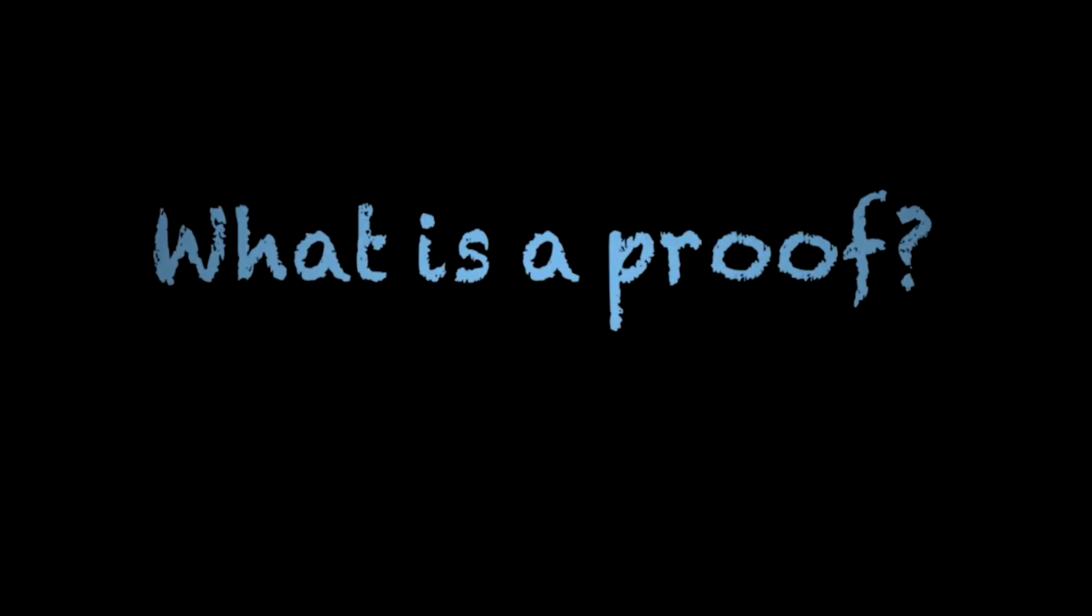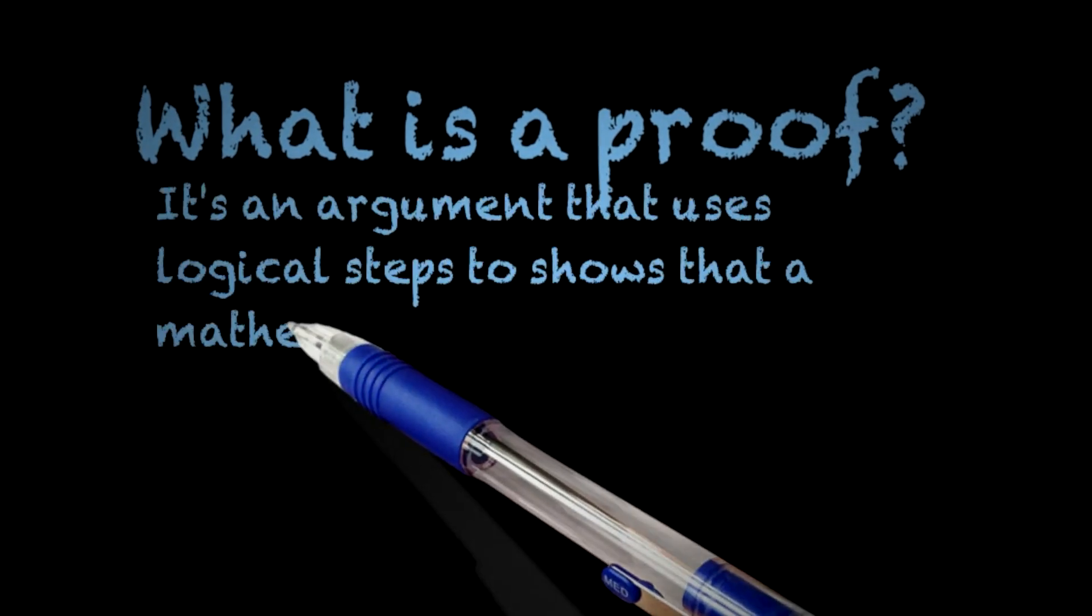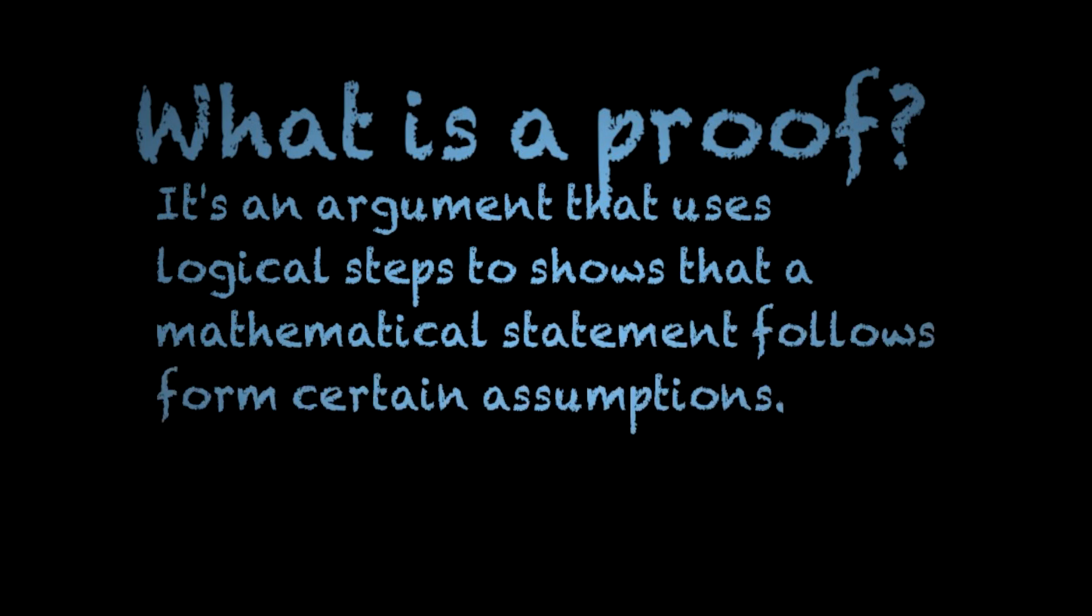So what is a proof? Here is a definition. A proof is an argument that uses logical steps to show that a mathematical statement follows from certain assumptions. Let's get deeper into what this actually means.